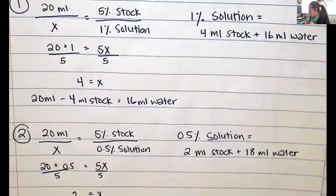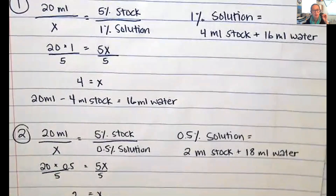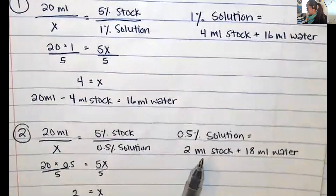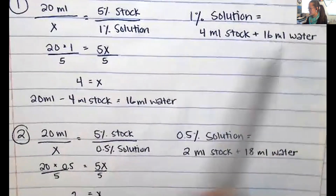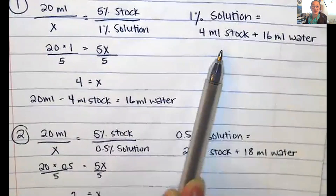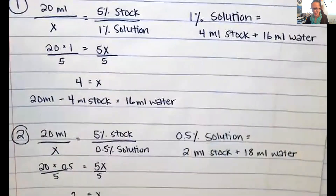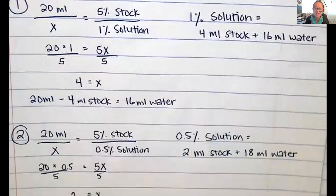Do this for all of your remaining petri dishes. Remember, one of them will be 0%, so that's easy — no salt at all. Calculate your solutions, figure out the recipe for each one, and then you're ready to move on to setup. See you in the next video.